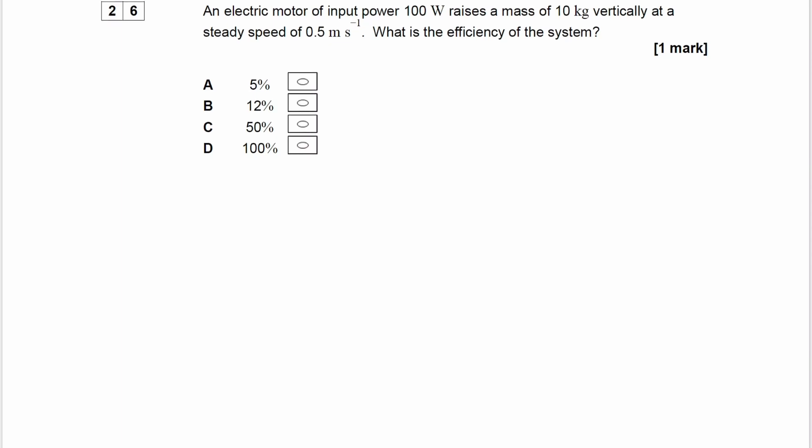So for this question we have an electric motor of input power of 100 watts that raises a mass of 10 kilograms vertically at a speed of 0.5 meters per second. And then we're trying to work out the efficiency of the system.